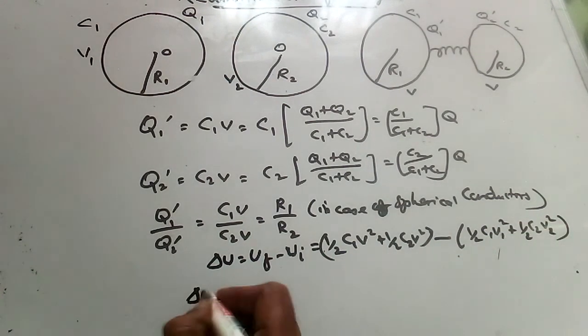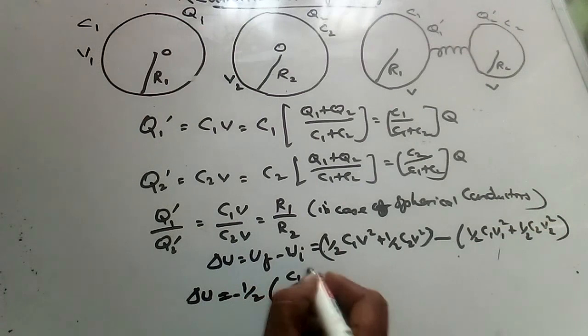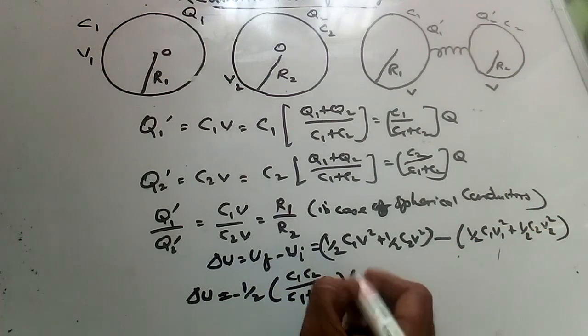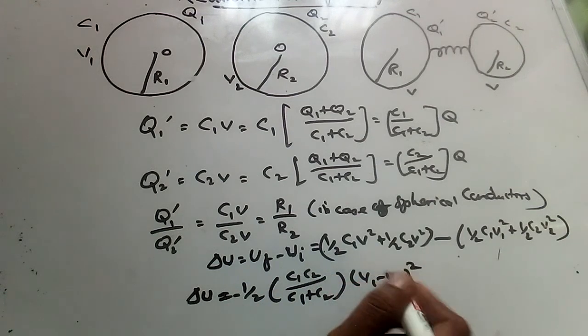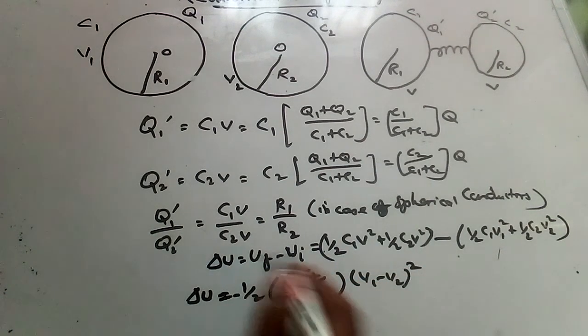So Del U equal to minus 1 by 2 if you simplify. The above equation is minus 1 by 2 C1 C2 by C1 plus C2, V1 minus V2 the whole square. Here the negative sign indicates the energy of the system decreases in the process.